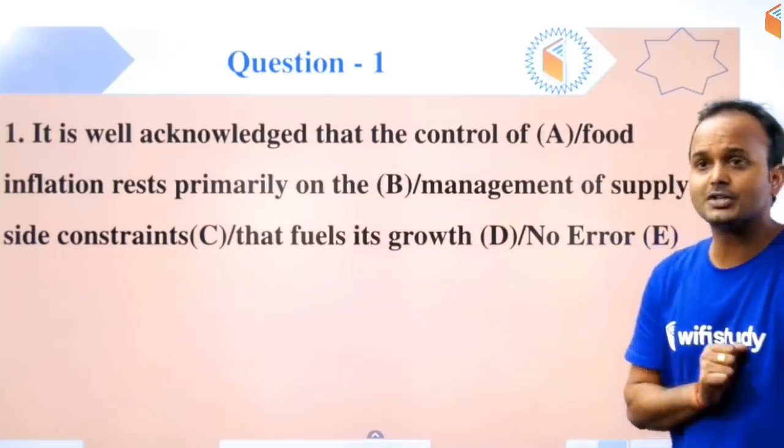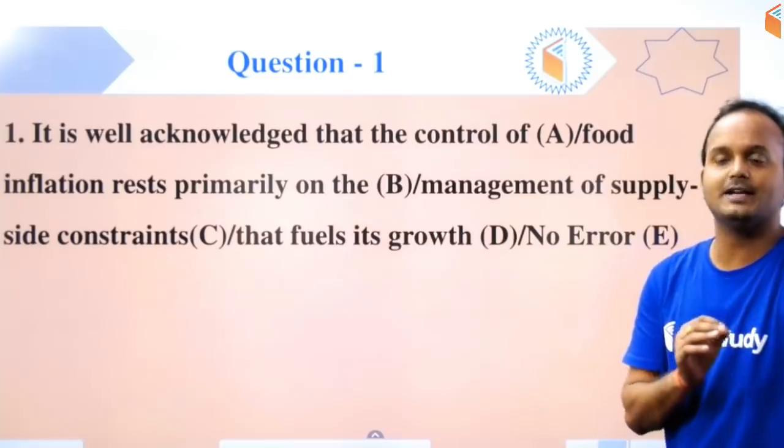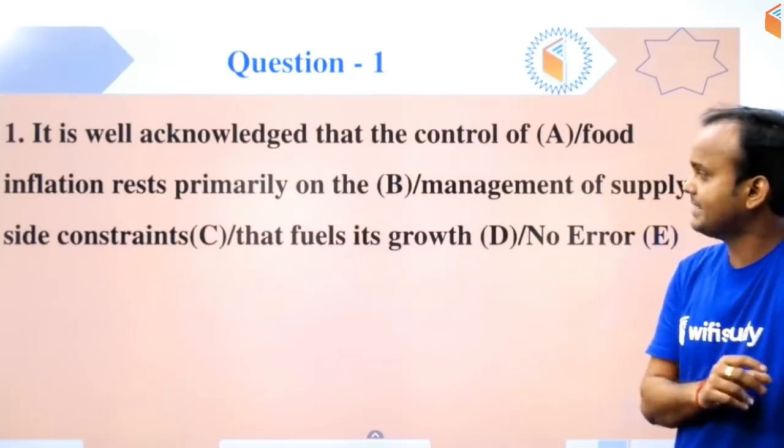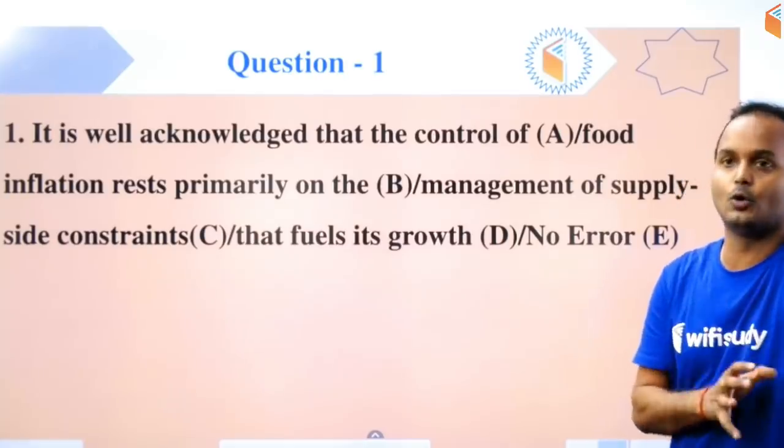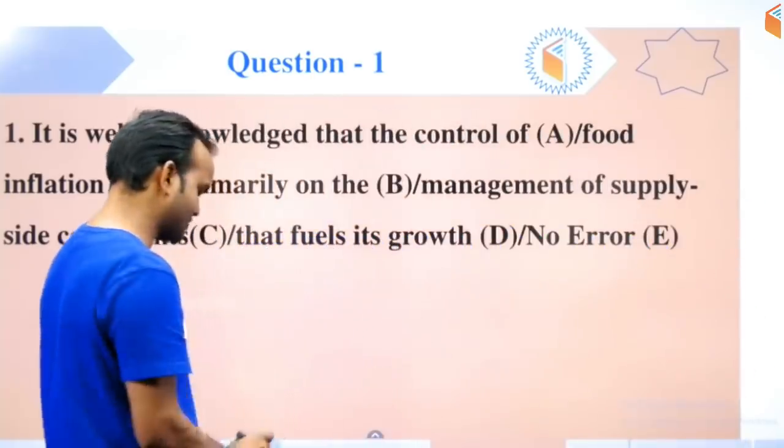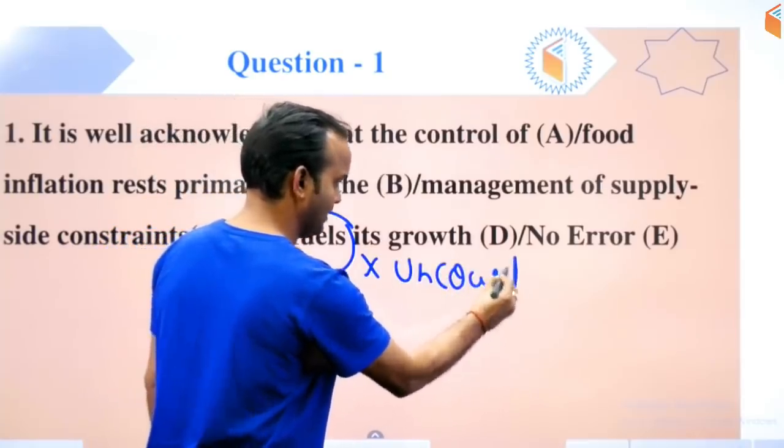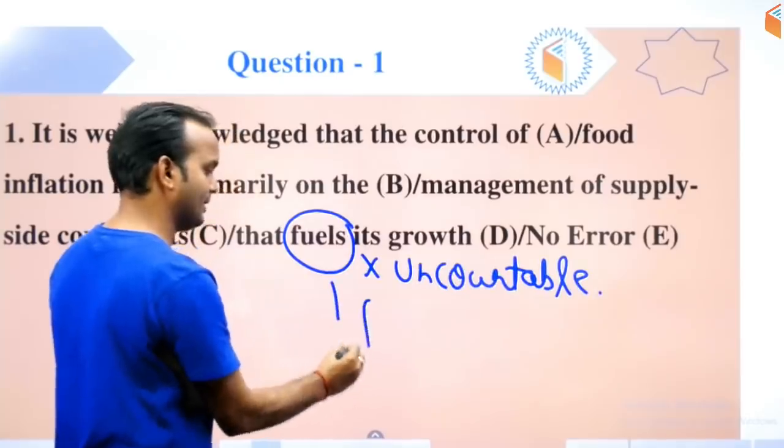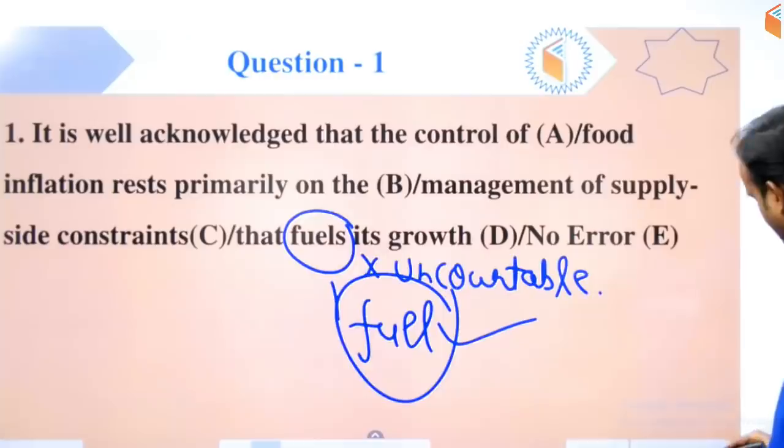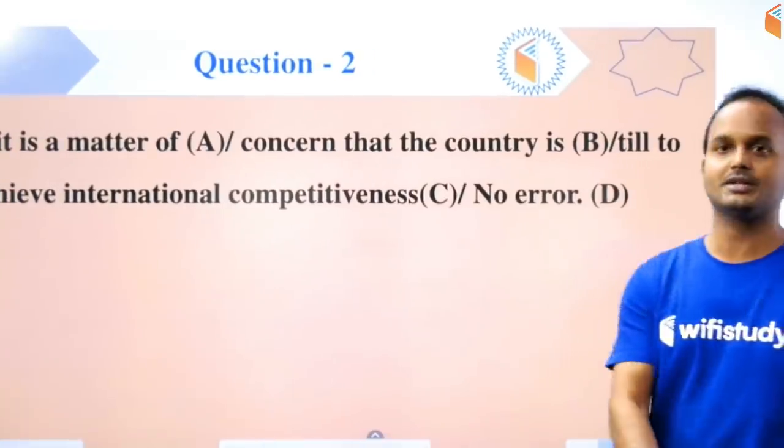Let's talk about the first question. The first question on your screen: 'It is well acknowledged that the control of flood inflation rests primarily on the management of supply side constraints that fuels its growth.' Last option: no error. Let's discuss the answer. You all know that fuel is an uncountable noun. And uncountable nouns are never made plural. So fuel here would be the correct answer.